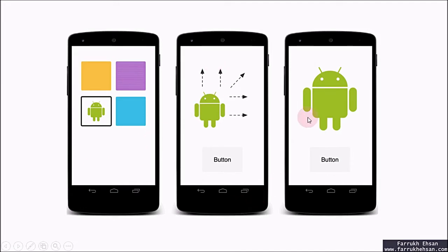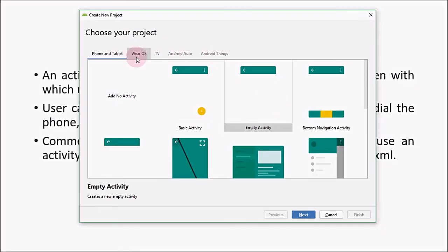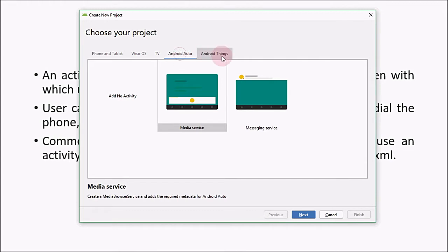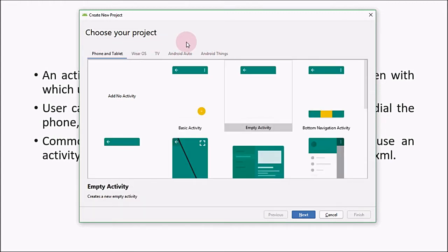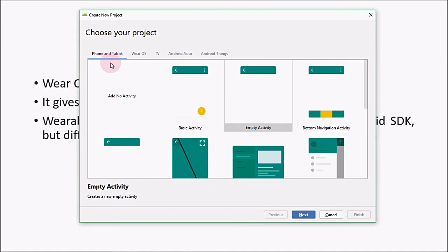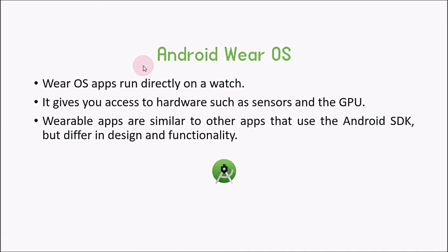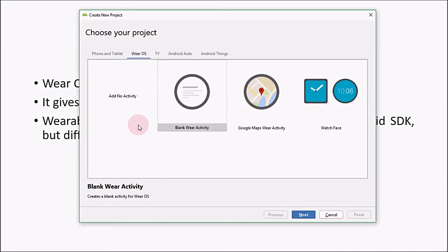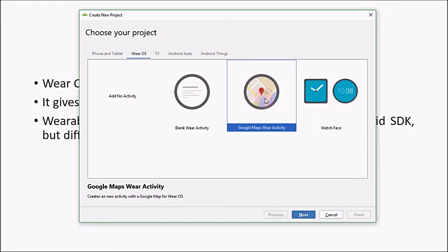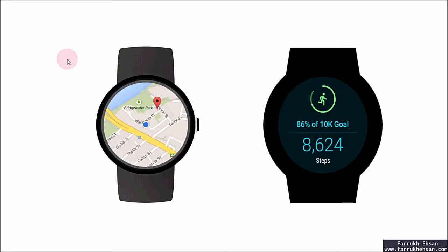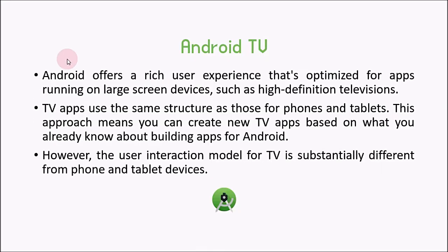These are different kinds of activities for Phone and Tablet. The other options are Wear OS, Android TV, Android Auto, and Android Things. Wear OS apps are those apps that run directly on smartwatches. They give you access to hardware such as sensors and the GPU. Wearable apps are similar to other apps that use the Android SDK but differ in design and functionality. If you want to develop applications for Android wrist watches, you can choose those activities from here.